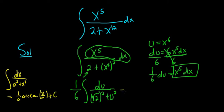So here, it's 1 over 6 times 1 over the square root of 2, arctangent, so arctan, and then it's u over a, but u is x to the sixth, so it's x to the sixth over the square root of 2.